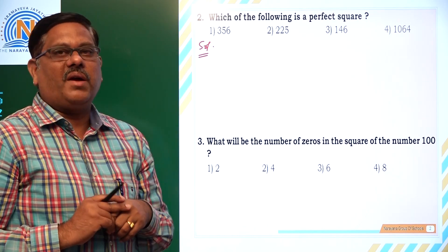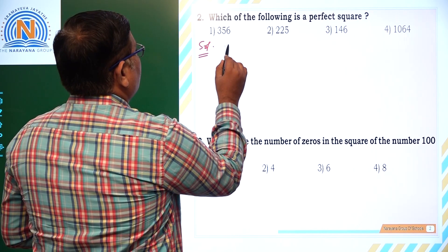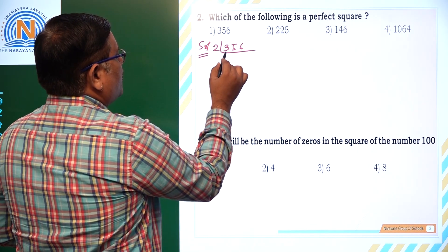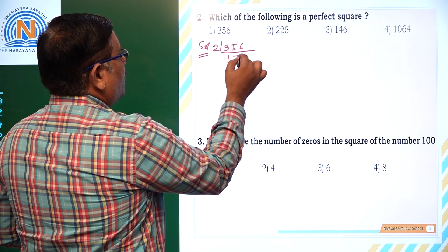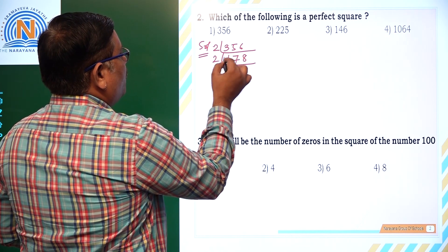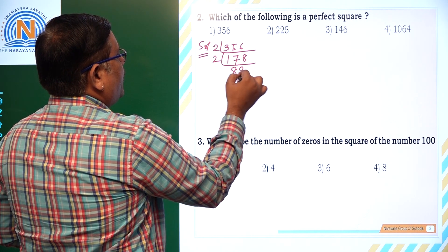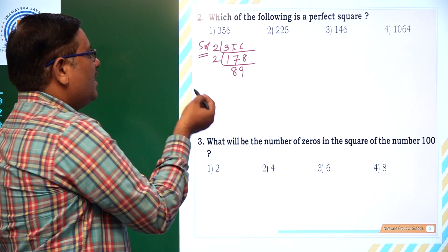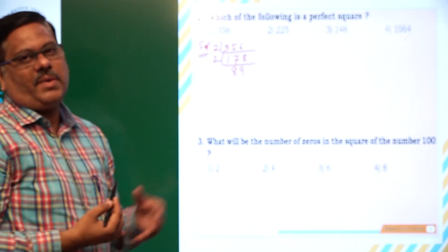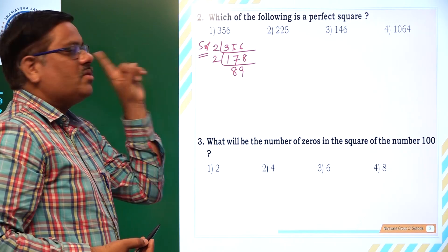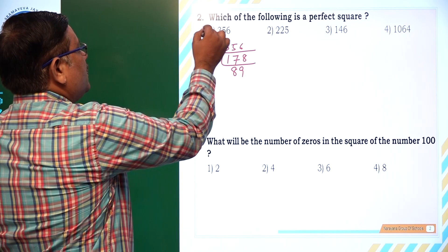If you take 356, 356 is 2 times 178. Again 2, that is 2 times 89. 89 is a prime number. So definitely 2 into 2 into 89 only. 89's power is only 1, so it is not a perfect square. So this is not a perfect square.